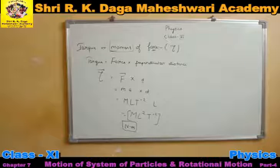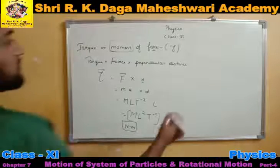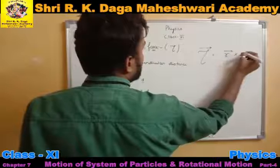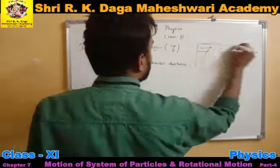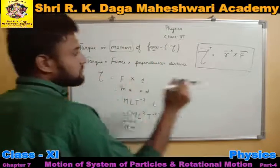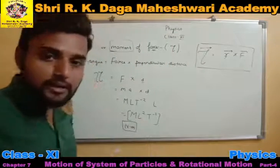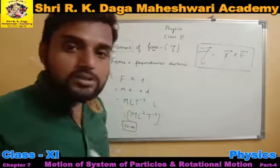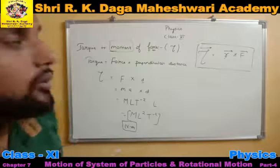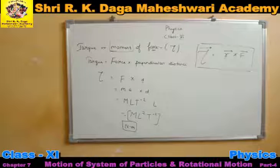Torque is just a force which is acting on a body which is rotating on its axis. Its vector representation will be: Tau is equal to R vector cross F vector. This will be the vector representation of torque. Here R is the position vector from the origin to the point where the body is rotating, and F is the magnitude of the force. In this way we can find out the value of torque.